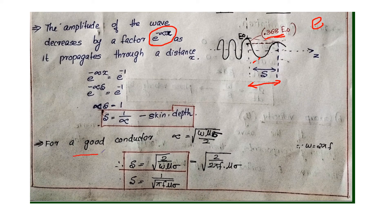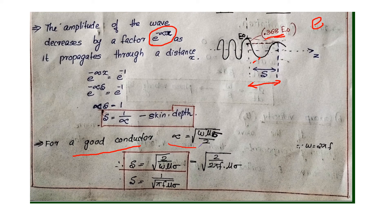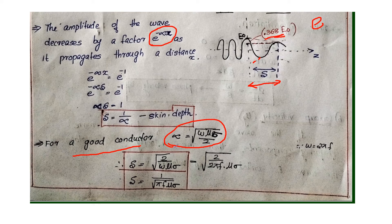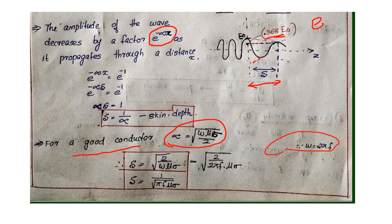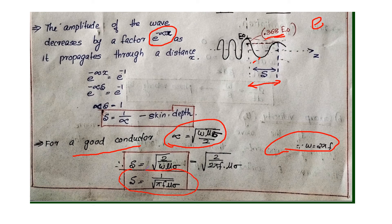Skin depth is shown in the good conductor case. In the case of a good conductor, the value of alpha equals root of omega mu sigma by 2. Then delta equals 1 by alpha, so root of 2 divided by omega mu sigma. We have omega equals 2 pi f, so substitute 2 pi f and the 2 cancels. Finally, we get skin depth or depth of penetration delta equals 1 divided by root of pi f mu sigma. Thank you.